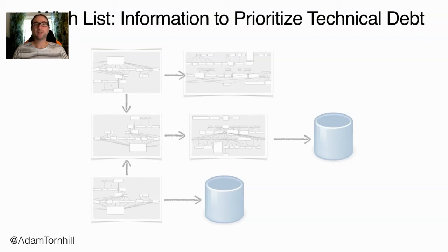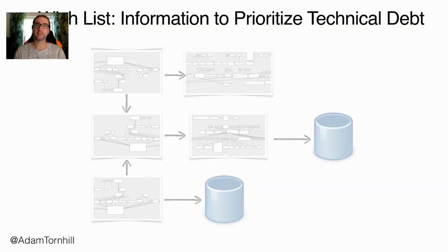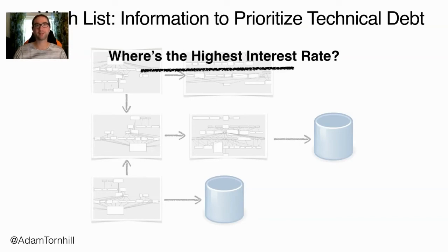So I want to raise awareness of the challenges when trying to prioritize technical debt. Based on what I've covered, I put together a wish list with the ideal information we need to prioritize technical debt. First, if we should address any debt, we should focus on the debt with the highest interest — the most expensive debt. Where is it?